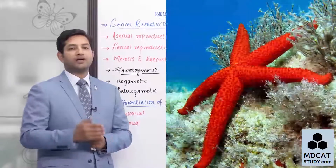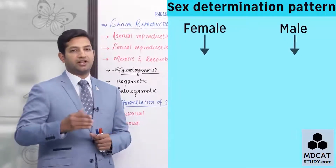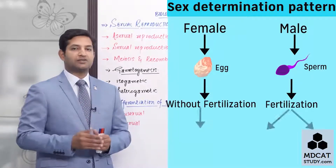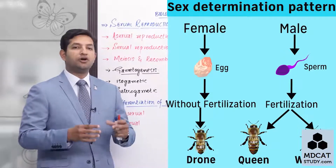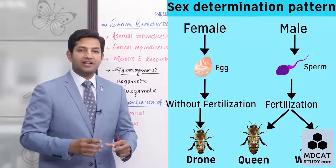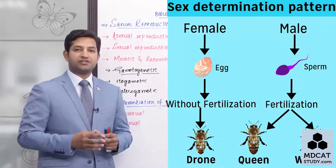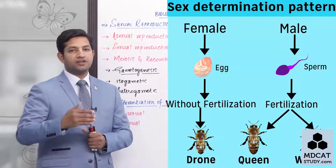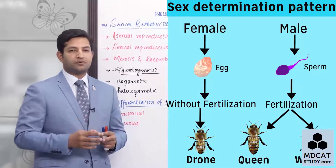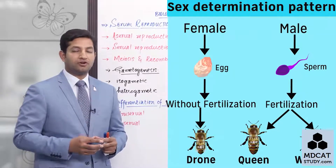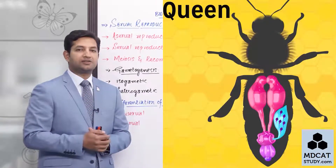On the other side, unisexual living organisms have entirely separate and different male and female bodies from one another. Their reproductive structures are also present in different bodies. These types of organisms are known as unisexual. We can easily determine which group humans belong to.